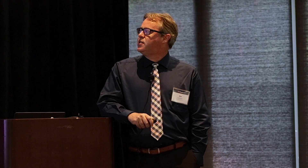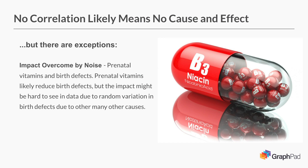The last one is that a lot of times there's a lot of noise in the system and you can't see the cause and effect or correlation. An example is prenatal vitamins and birth defects. There may be a cause-and-effect relationship between vitamins reducing birth defects, but there's so much variation in birth defect data that it might be hard to see unless a very specific trial was run.